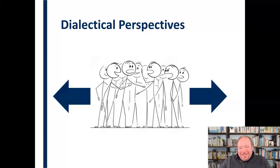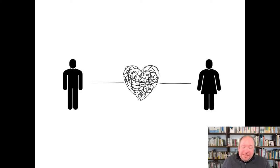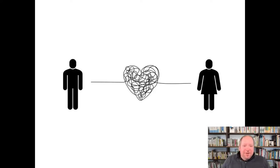First understanding that those dialectics exist, and then figuring out the best way — as an individual and in this particular relationship — to manage them. Relationships are complicated; they always have been and always will be. However, that complication shouldn't keep us from engaging in those relationships because it's worth the effort. They're such a valuable thing that gives life meaning that we ought to embrace those complications and be willing to put in the work.